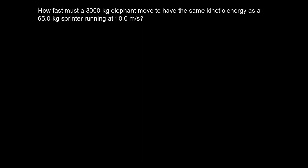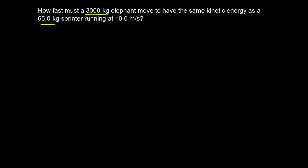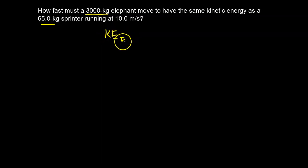Let's take a look at a problem that deals with kinetic energy. How fast must a 3,000 kilogram elephant move to have the same kinetic energy as a 65 kilogram sprinter running at 10 meters per second? We're going to set our kinetic energies equal to each other — the kinetic energy of the elephant equal to the kinetic energy of the sprinter.